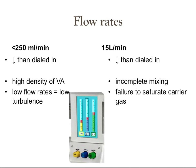The volatile anesthetics have a relatively high density, and at low flow rates there is insufficient turbulence generated in the vaporizing chamber to upwardly advance the vapor molecules. At high flow rates — approximately 15 liters per minute — you also have decreased output compared to what you dialed in, because there is incomplete mixing and failure to saturate the carrier gas in the vaporizing chamber.